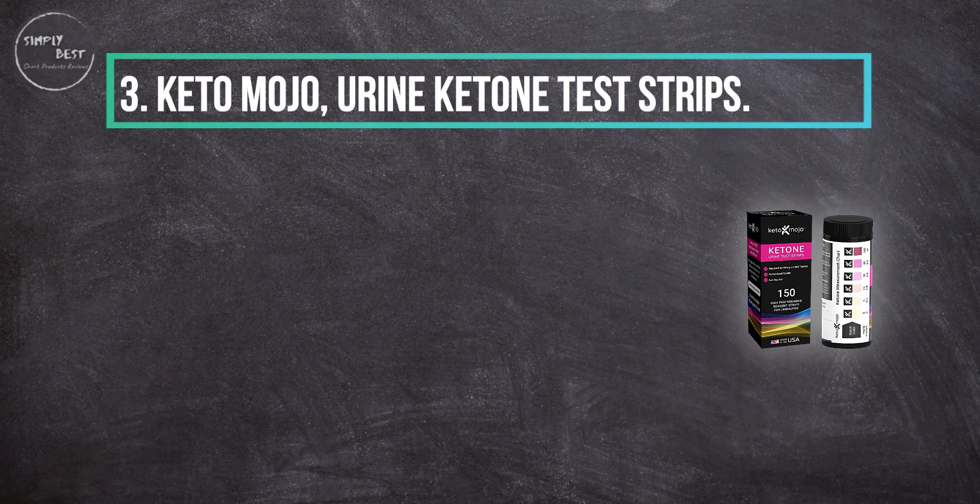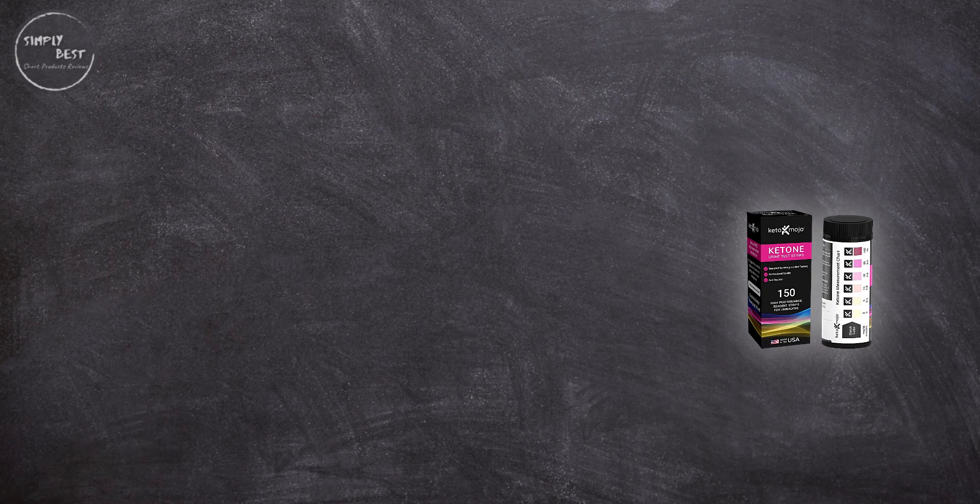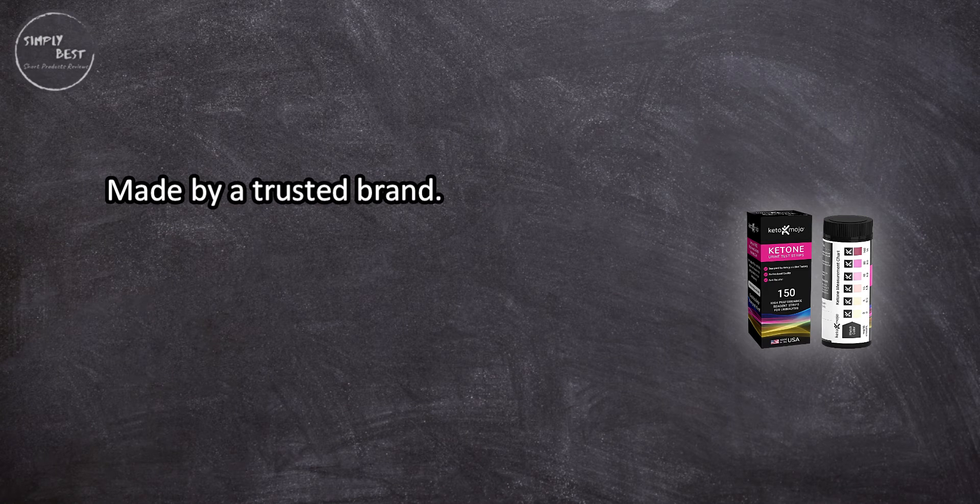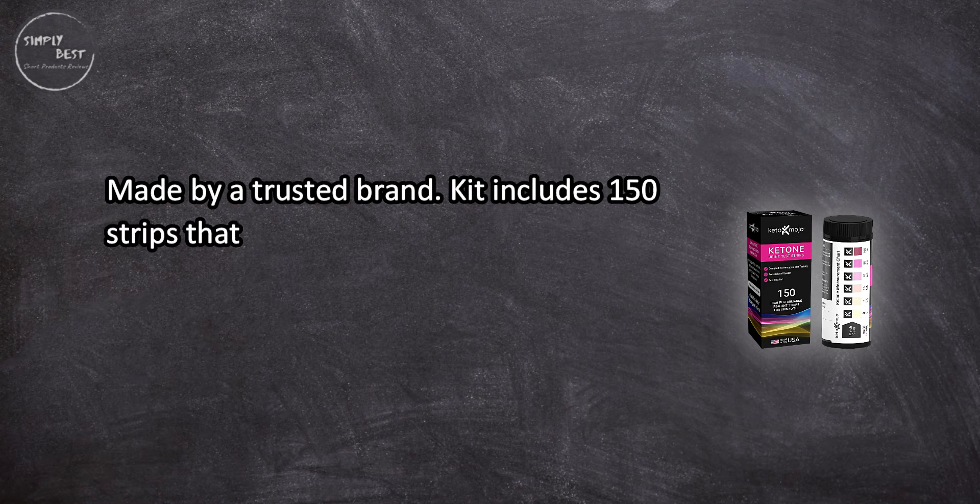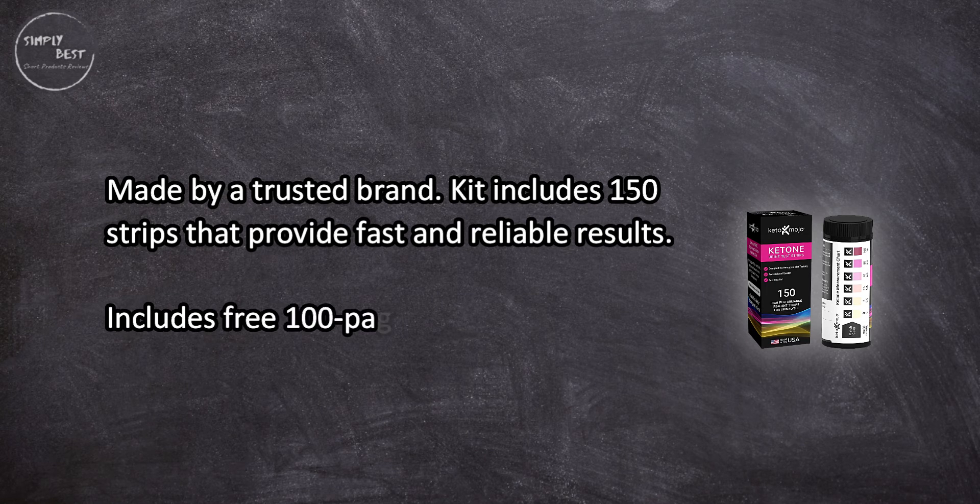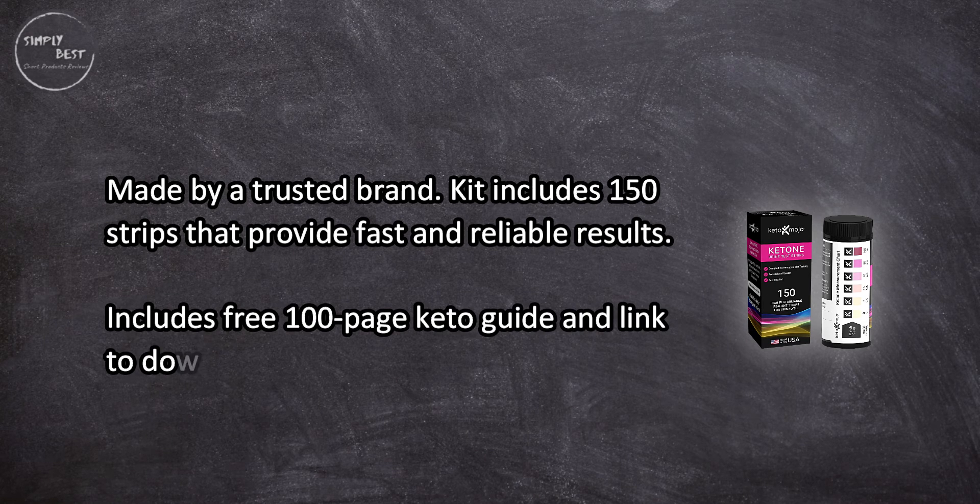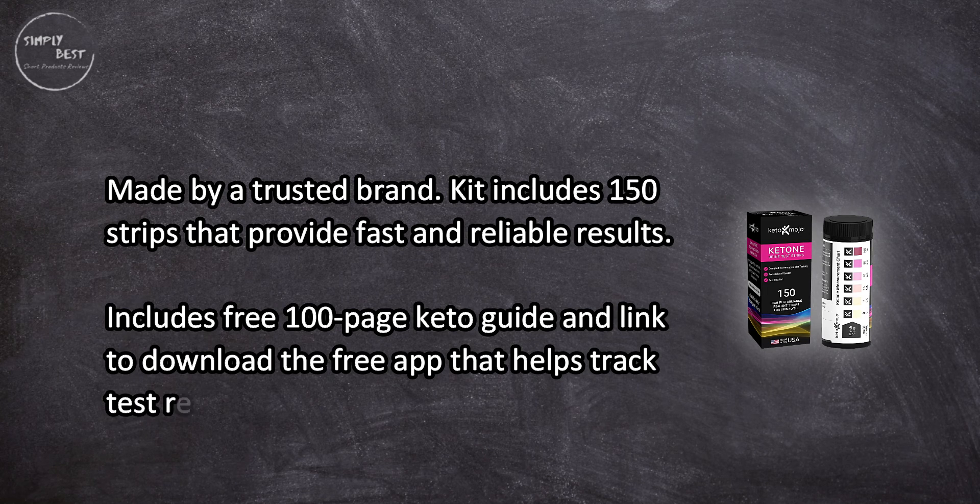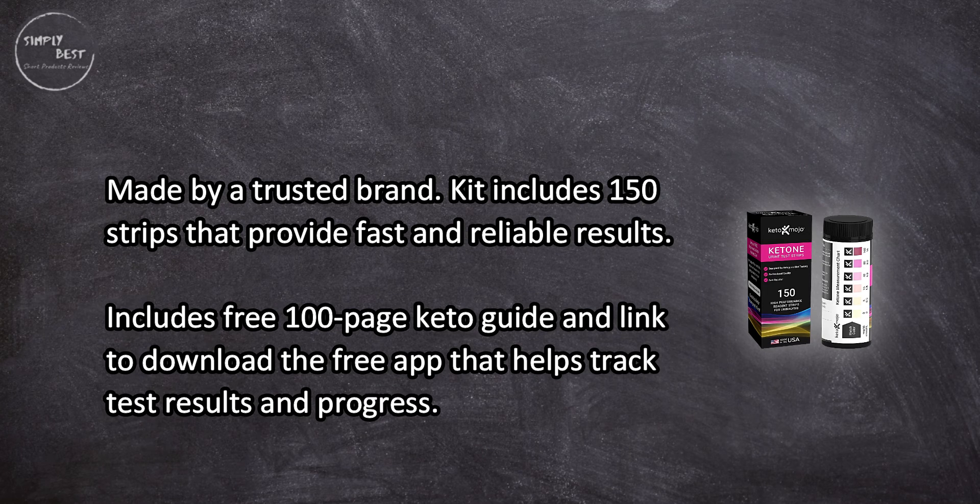At number three, Keto Mojo Urine Ketone Test Strips. Made by a trusted brand, kit includes 150 strips that provide fast and reliable results. Includes free 100-page keto guide and link to download the free app that helps track test results and progress.